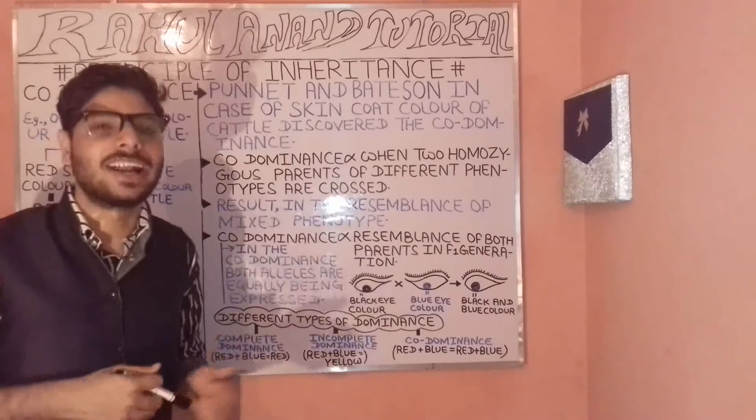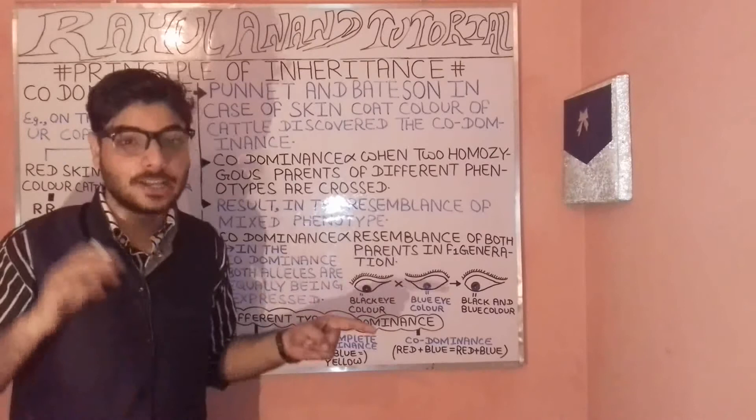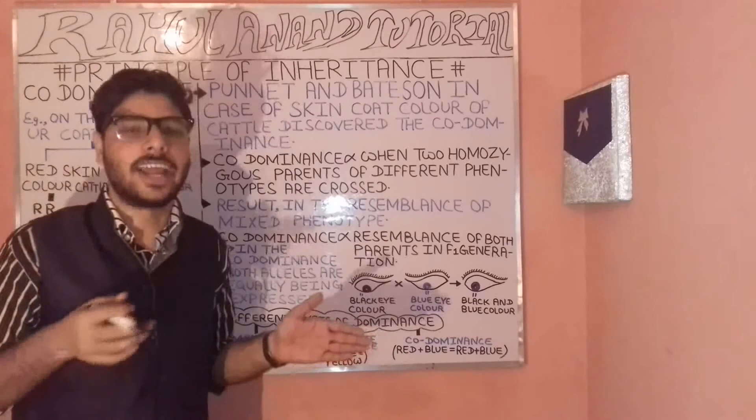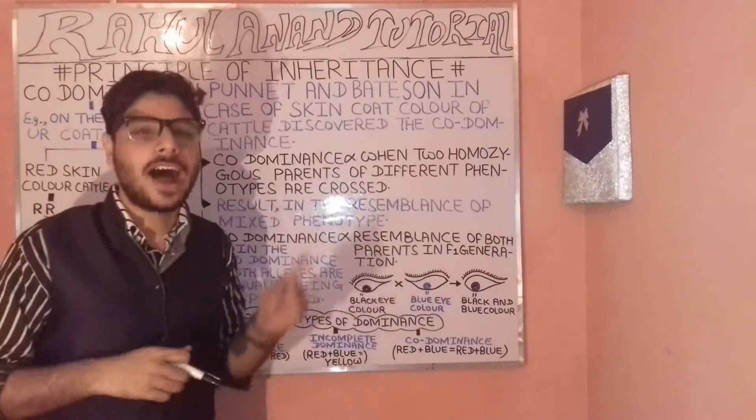I hope you have understood the concept of co-dominancy and what generally occurs in co-dominancy. We will understand the flower color example in the next lecture. If you liked the video, please subscribe, like, and comment below so I know which concepts you want to learn more about. Thank you for watching Rahul Anand Tutorials.